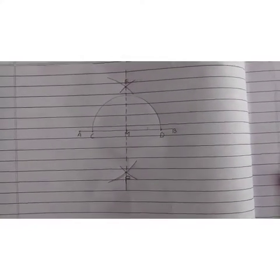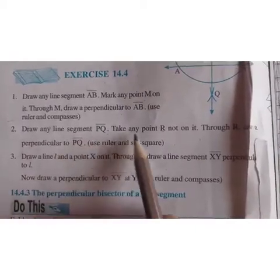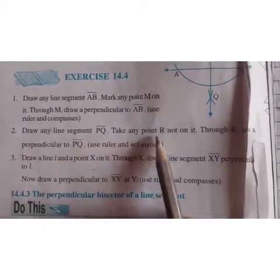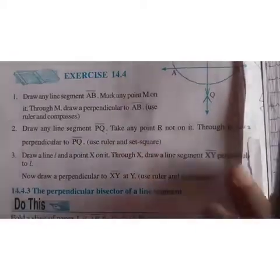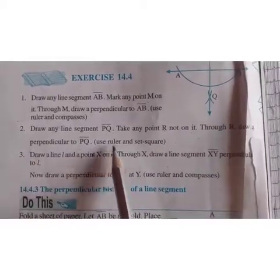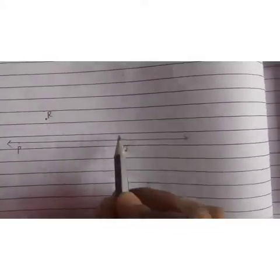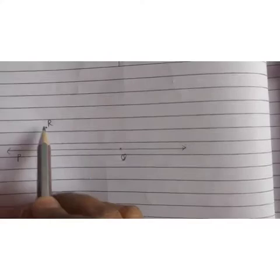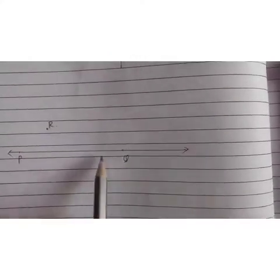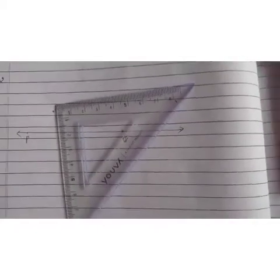Let us move to question number 2. Draw any line segment PQ. Take any point R not on it. Through R, draw a perpendicular to PQ using ruler and set square. I have drawn a line segment PQ and a point R which is not on PQ. You have to use your set square.